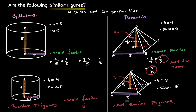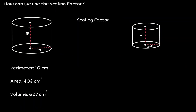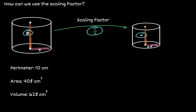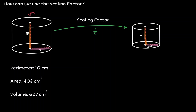Now let's discuss one application of the scale factor. We have two cylinders which we have already shown are similar figures. We have shown that when we compare both the height and the radius of the cylinders, we obtain a scale factor of 1 half. Notice that 8 multiplied by 1 half gives 4, and 5 multiplied by 1 half gives 2.5.